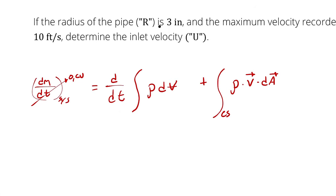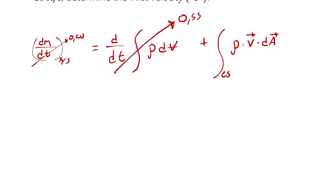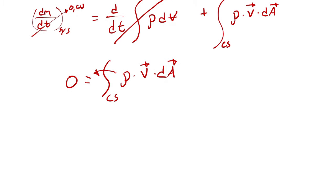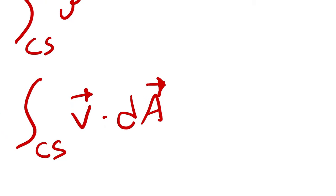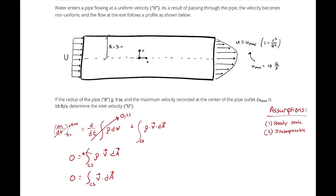Because we have steady state, the entire time-derivative term is zero — nothing can change with respect to time. So we have zero equals the integral across the control surface of density times velocity vector dot area vector. Since density is constant and incompressible, it factors out. Dividing both sides by density gives zero equals the integral of velocity vector dot dA across the entire control surface.